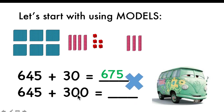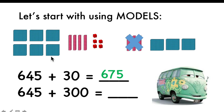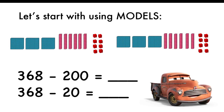Now I want to add hundreds. Which digit is in the hundreds place? Six, right? So six hundreds will now become nine hundreds. Only that six digit will change to nine. Four and five will stay. Now, we're going to take away. We have 368, 368 take away two hundreds. Cross them out. The hundreds digit will not be three anymore, it will be only one. The tens and ones stay the same, so three will change to one. It will become 168.